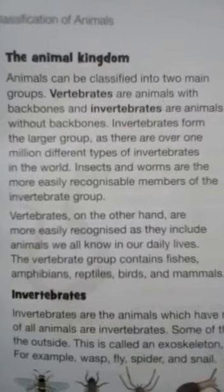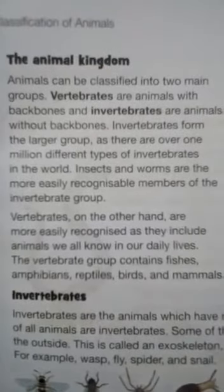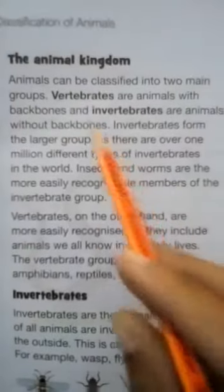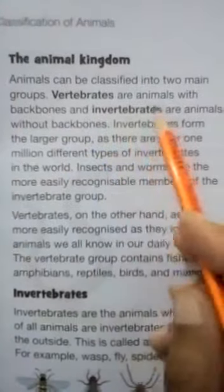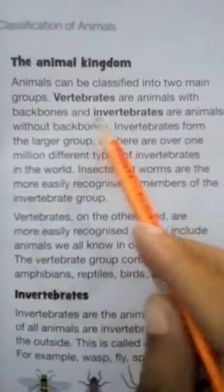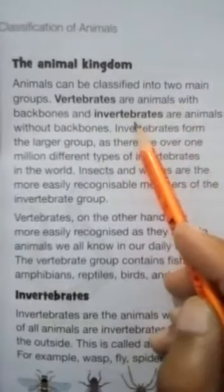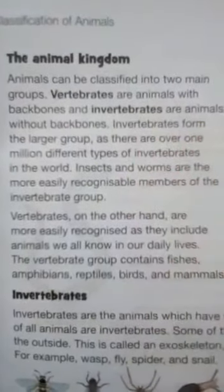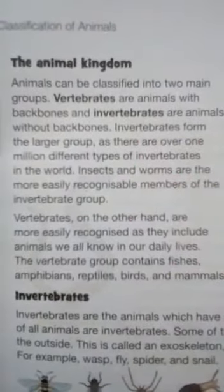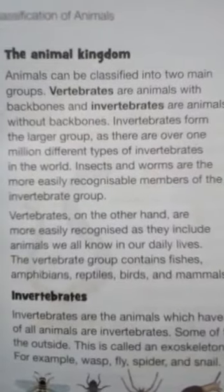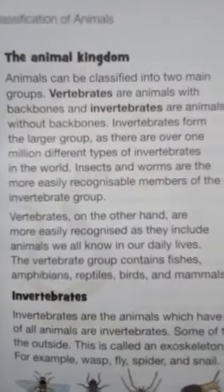Animals can be classified into two main groups: vertebrates and invertebrates. The kingdom animals is divided into these two groups — vertebrates and invertebrates.